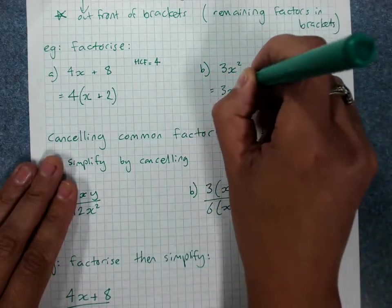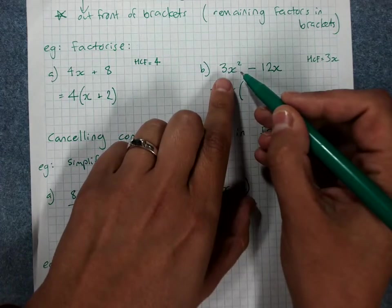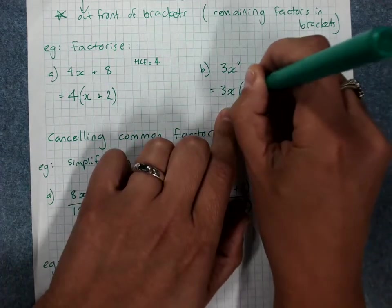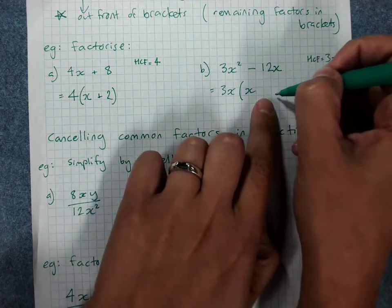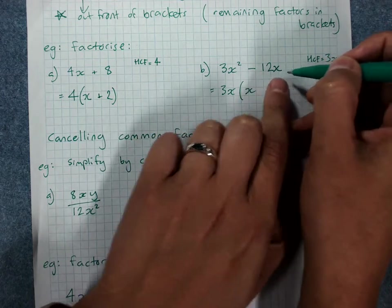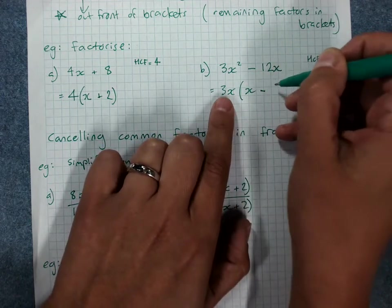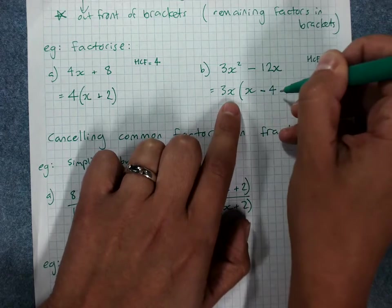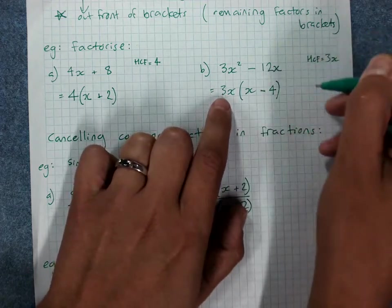Pop 3x out the front. 3x times what gives me 3x squared? Well that would be x, because 3x times x is 3x squared. 3x times what gives me negative 12x? It would have to be times a negative. 3 times 4 is 12, and I've already got the x in there. 3x times negative 4 is negative 12x.